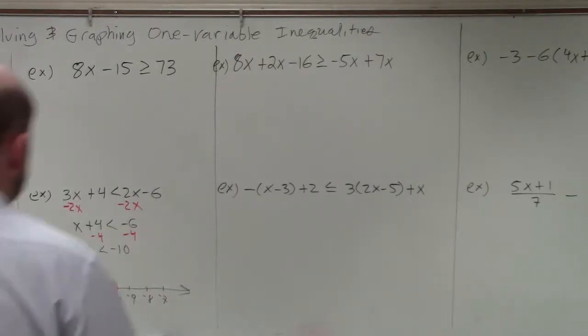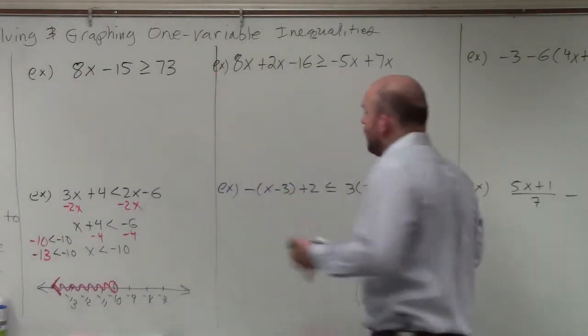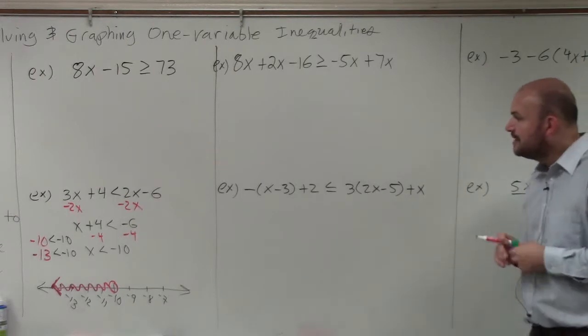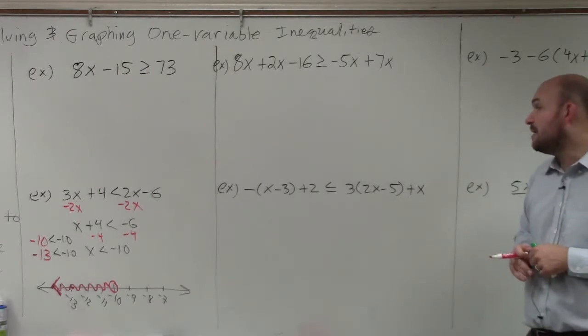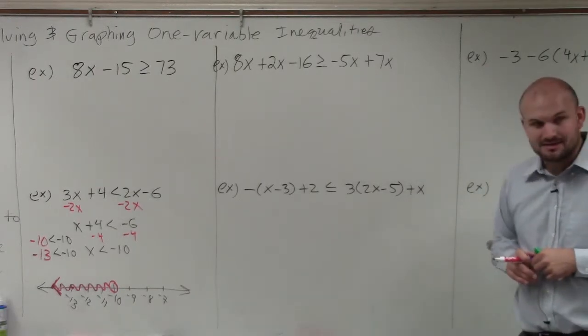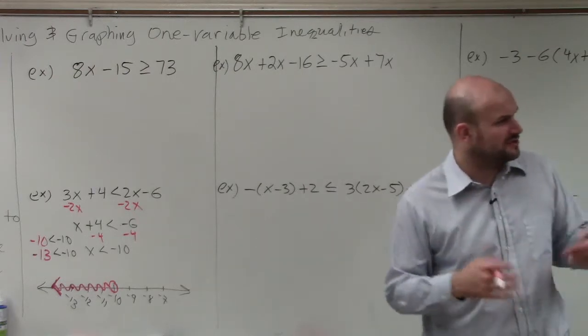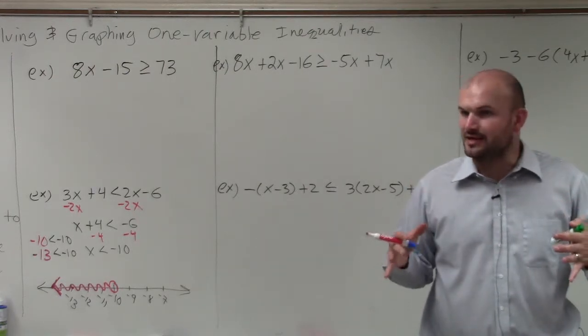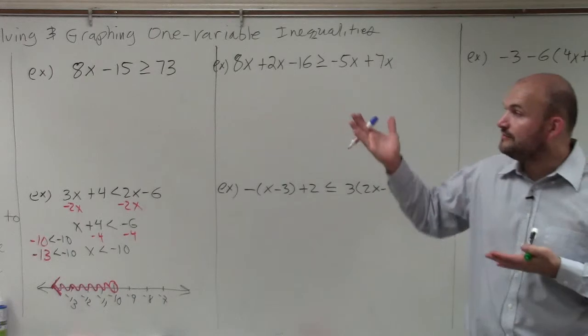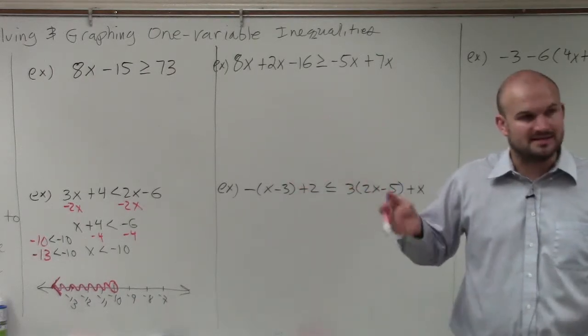So in this example, basically what I have is negative times the quantity x minus 3 plus 2 is less than or equal to 3 times the quantity 2x minus 5 plus x. Something like this, a lot of times students automatically get a little scared looking at it because it seems like a lot of work. But if you can just go back to the process and do it step by step.